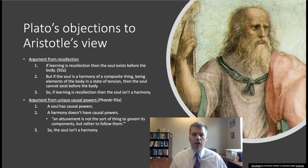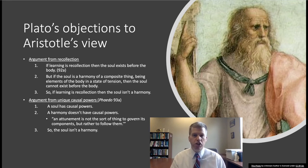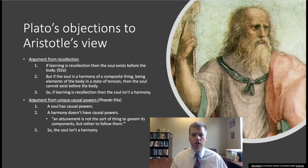The second argument Plato gives in the Phaedo is that the soul has unique causal powers, and a harmony doesn't have causal powers. He says: 'An attunement is not the sort of thing to govern its components, but rather to follow them.' Changes in the lyre make changes in the attunement, but not vice versa — changes in the attunement don't make changes in the lyre. But this isn't the case for souls, because we can intend, we can decide, we can act for reasons, which makes changes to our body. So there's a question for Aristotle's view: how does he make sense of the soul having causal power? Aristotle is on better footing here because, for Aristotle, forms are active principles in nature — they're metaphysically primitive. So he can hold that the soul does have causal powers, because it's a form, and forms themselves have underived causal powers.